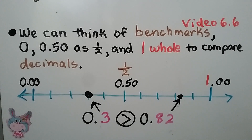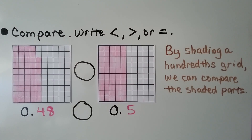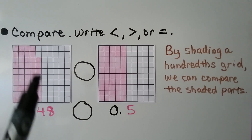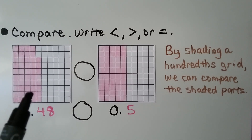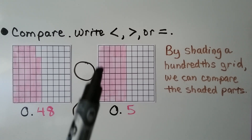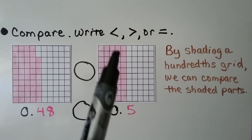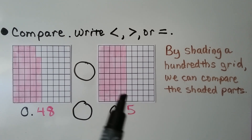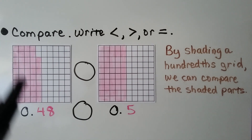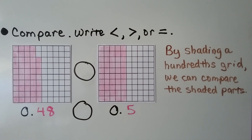We need to compare forty-eight hundredths to five tenths. By shading a hundredths grid, we can compare the shaded parts. Here, forty-eight out of 100 are shaded. On the other grid, five columns of ten are shaded — that's fifty hundredths. We can easily see this one is missing two, so forty-eight hundredths is less than five tenths.